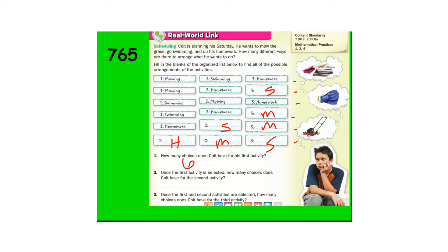Once the first activity is selected, how many choices does he have for the second activity? Well, he's got three choices. So once he picks one choice, there's two left. After he picks the first and second activities, then there's one left.